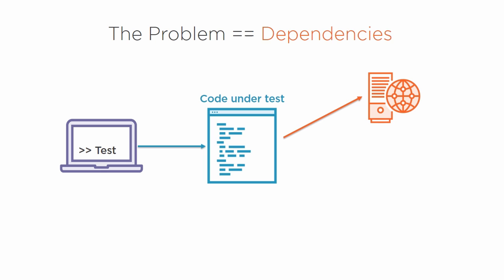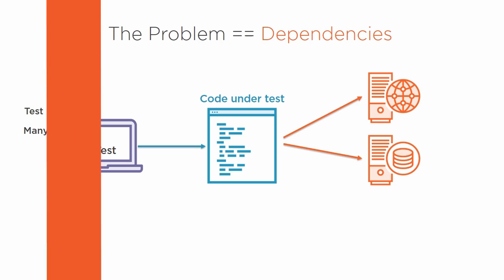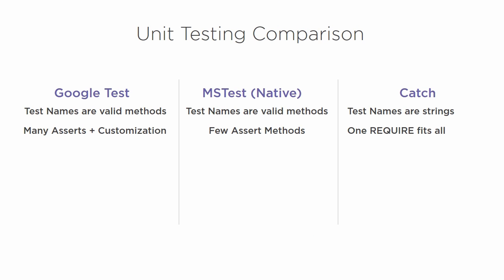Mocking frameworks are crucial when writing unit tests. Without them, we cannot write good deterministic tests isolated from dependencies outside of our control.